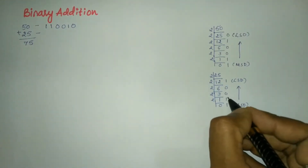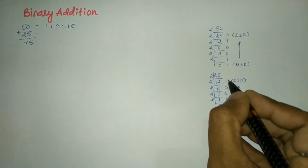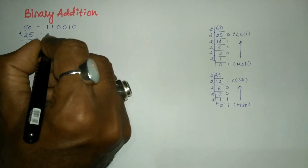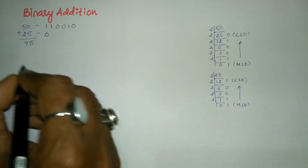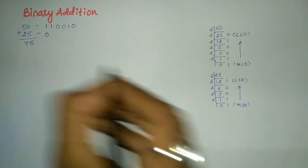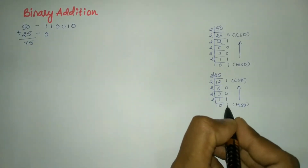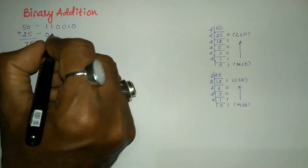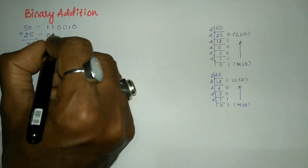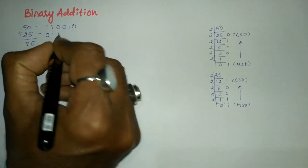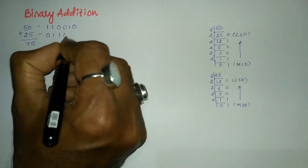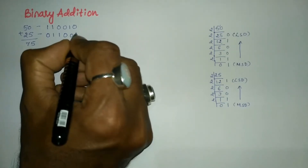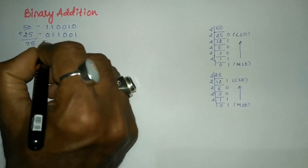Since 50 has 6 bits and 25 has only 5 bits, we add a leading 0 to 25. Writing from most significant digit to least significant digit gives us 0 1 1 0 0 1.